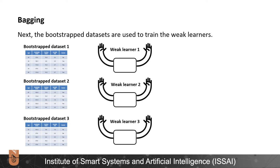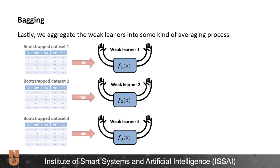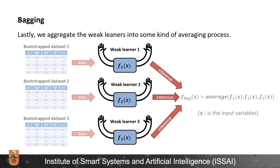Next, the bootstrapped datasets are used to train the weak learners. The training can be performed in parallel. Lastly, we aggregate the weak learners into some kind of averaging process.